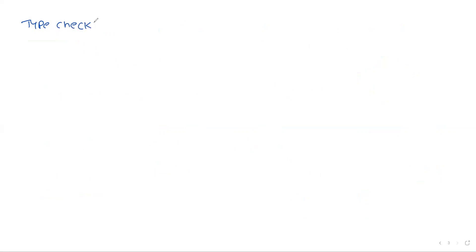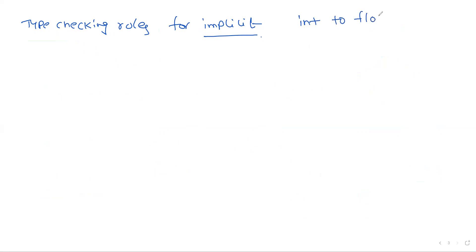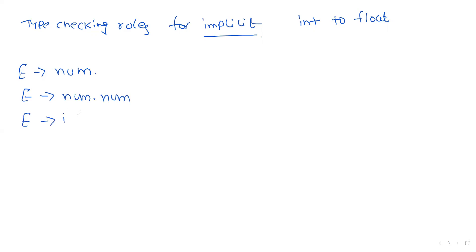Now I will write down different type checking rules for implicit conversion — for example, integer into float. Consider a grammar: E → num, E → num, E → num * num, E → id, E → E1 op E2.